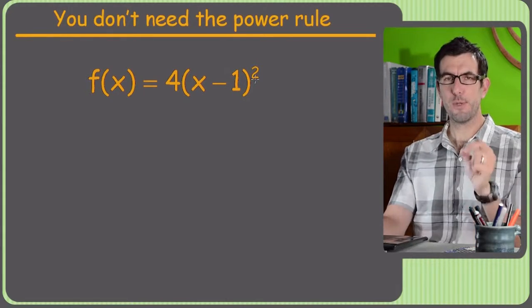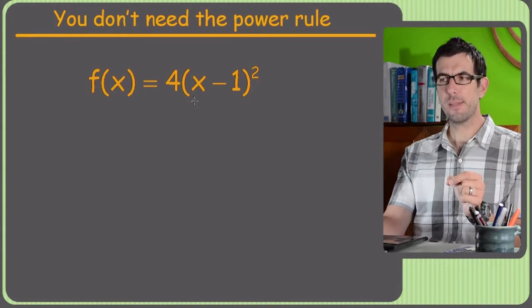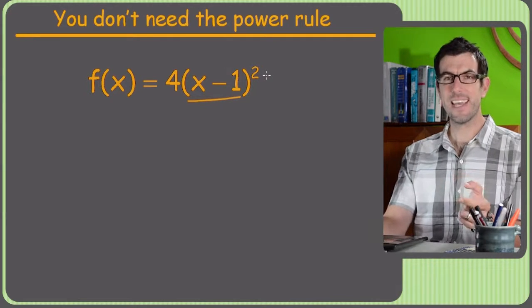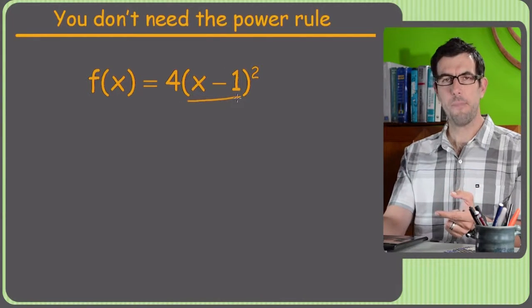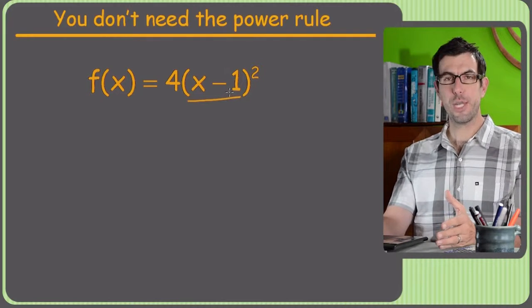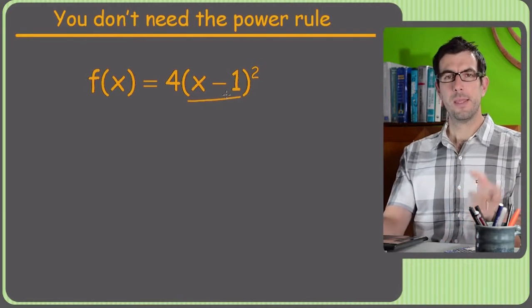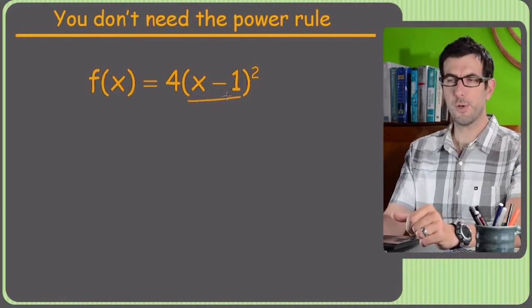Well, the problem with the power rule is if you're going to do the power rule and whatever's in the parentheses under the power is not just an x, it's got like an x minus 1 in this case. Now you have to do the chain rule also, and the chain rule is really the thing that makes the other rules so much nastier to work with.